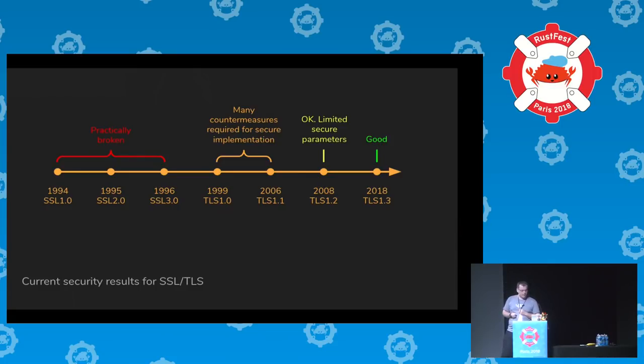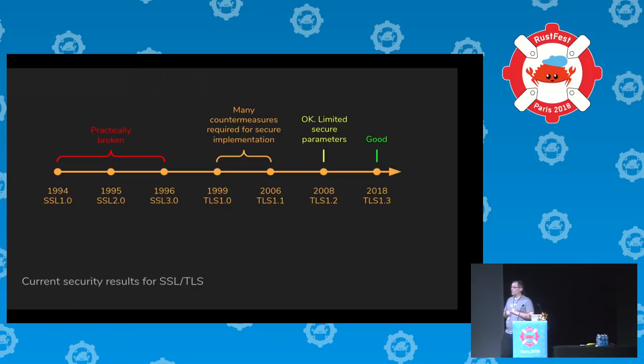Go's TLS library, which is really good, started without any of these countermeasures and still has fewer than OpenSSL for the same bugs. More seriously, in 2013 OpenSSL implemented one of these countermeasures, had a bug in it, and that bug stayed until 2016 — and the bug was worse than the original problem the countermeasure was trying to fix.